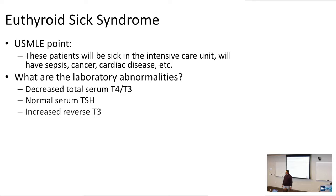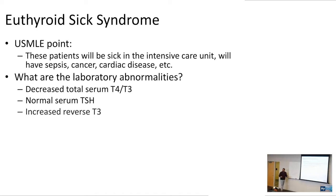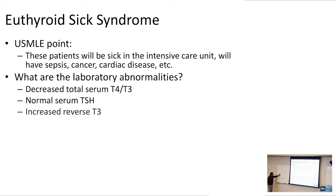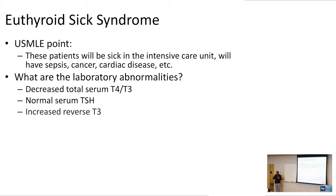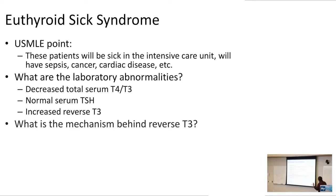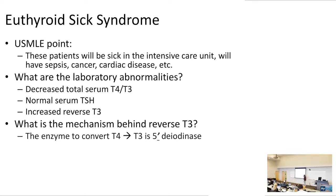T4 can be made into two things: T3, which is metabolically active, and reverse T3, which is metabolically inactive. The enzyme 5-deiodinase takes T4 and makes it into T3. In states of illness, your body wants to conserve energy, so T4 instead of going to T3 will become reverse T3. That's the pathophysiology behind increased reverse T3 in euthyroid sick syndrome — the 5-deiodinase enzyme makes reverse T3, which is biologically inactive.